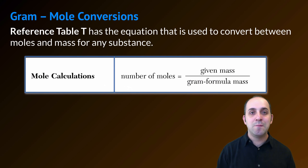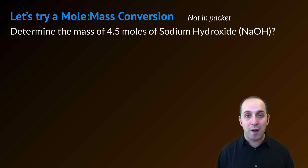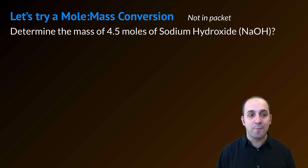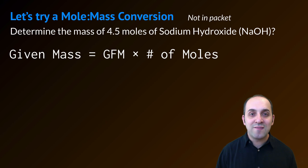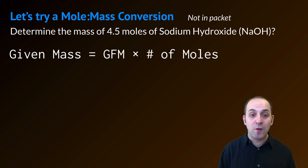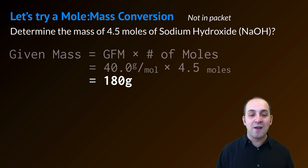You absolutely need to be able to convert between grams and moles — it's a very common calculation in chemistry. Reference table T has the equation: the number of moles equals the given mass divided by the gram formula mass. Let's do a mole-to-mass conversion. Determine the mass of 4.5 moles of sodium hydroxide, NaOH. Rearranging the equation, given mass equals gram formula mass times number of moles. Substituting in: 40.0 grams per mole times 4.5 moles gives a final answer of 180 grams — that is the mass of 4.5 moles of sodium hydroxide.